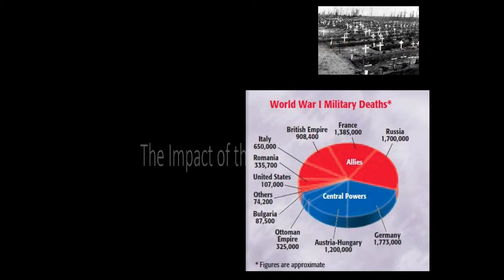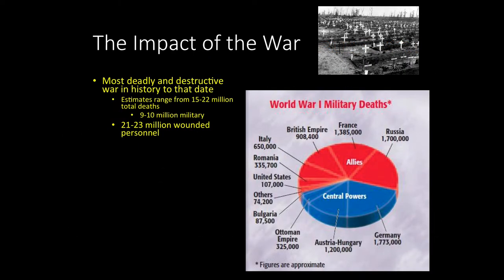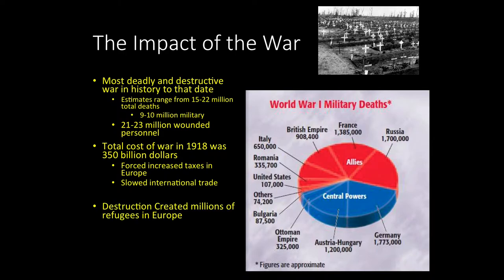Naturally at the end of a war, the first thing everyone associates with how bad it was is looking at death tolls. The Great War was more deadly and destructive than any war in history to that date. We're talking 9 to 10 million military deaths, with estimates ranging from 15 to 22 million total deaths across the whole population, and an additional 21 to 23 million wounded — casualties as they would say.